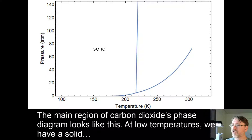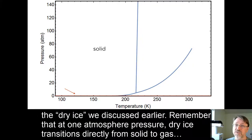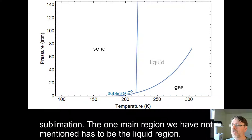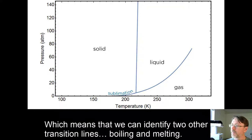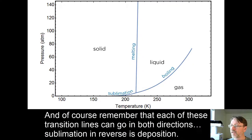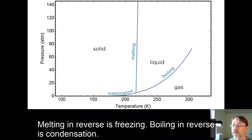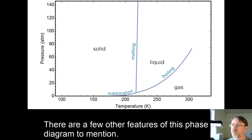The main regions of carbon dioxide's phase diagram look like this. At low temperatures, we have a solid, the dry ice we discussed earlier. Remember that at one atmosphere pressure, dry ice transitions directly from solid to gas, sublimation. The one main region we have not mentioned has to be the liquid region, which means that we can identify two other transition lines, boiling and melting. And, of course, remember that each of these transition lines can go in both directions. Sublimation in reverse is deposition. Melting in reverse is freezing. Boiling in reverse is condensation.